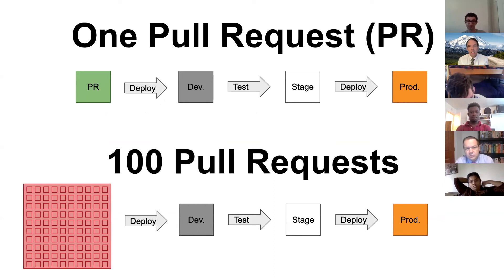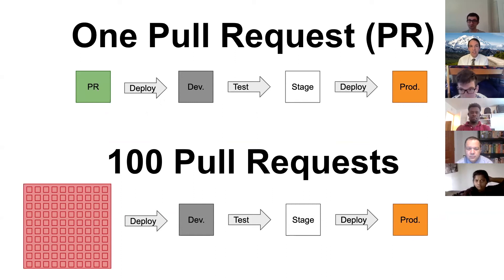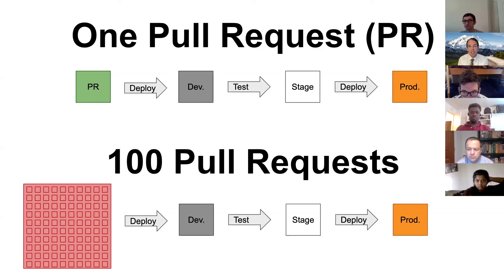The top diagram illustrates what you did: one change, one pull request. Now in a different scenario — a large company with a hundred developers all releasing code at the same time — how long do you think it would take to get them to agree to deploy? Days, weeks, months?